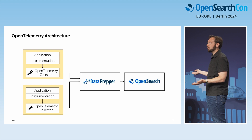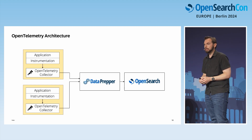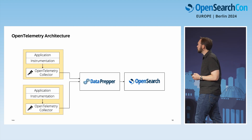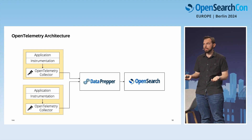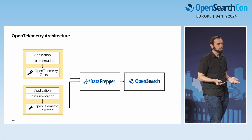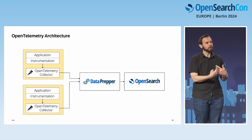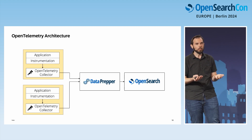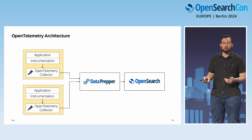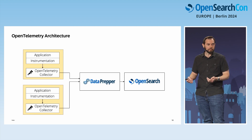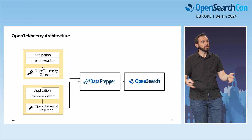This shows our reference architecture for using OpenSearch and DataPrepper with the OpenTelemetry ecosystem. Your applications can be instrumented using the OpenTelemetry SDKs and auto-instrumentation. When instrumented, an application sends span data to the OpenTelemetry Collector — running as a sidecar on Kubernetes or as another process on EC2. Collectors from all your applications then send to one single DataPrepper cluster, which pushes data into OpenSearch.